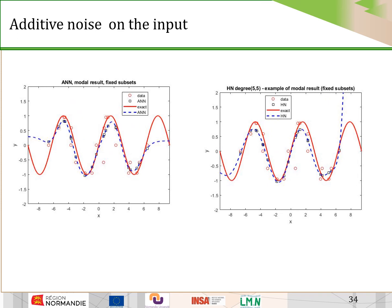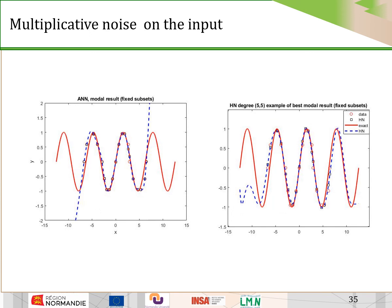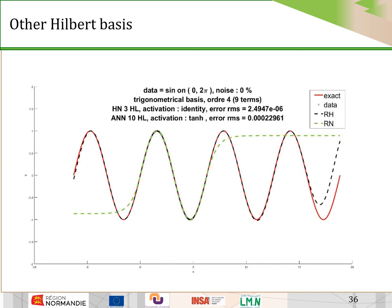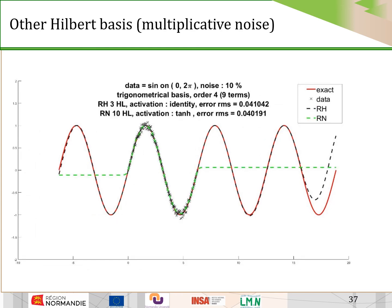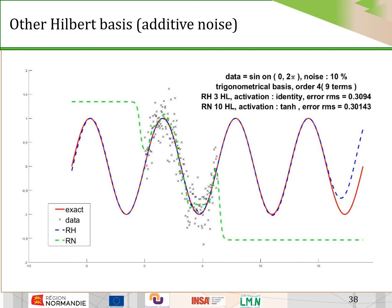When we consider additive noise on the input, the effects are worse, as we can see in the figures. With multiplicative noise on the input, again the results are not so good, except on the data set itself. We also examined the possibility of using other Hilbert bases — for instance, a trigonometric basis with nine terms. Again, the results are analogous: with multiplicative noise and with additive noise, we observe the same behavior. The Hilbert basis is good for extrapolation while the neural network is not.